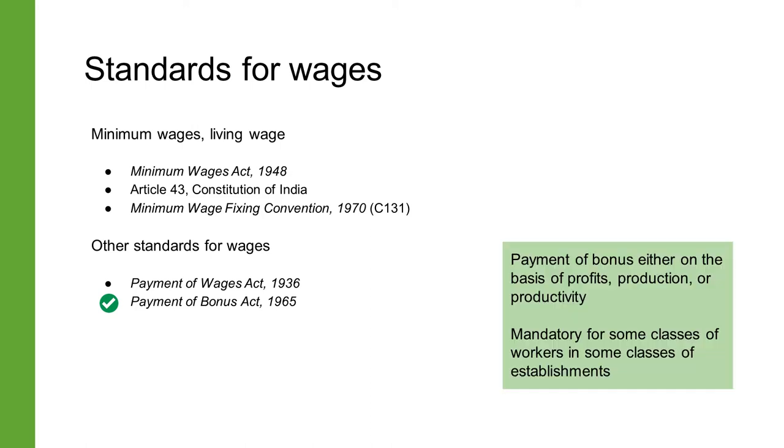The Payment of Wages Act of 1936 seeks to ensure that employers make timely payment of wages to employees and prevent some types of deductions from wages. The Payment of Bonus Act of 1965 provides for the payment of bonus — either on the basis of profits or on the basis of production or productivity — to some types of employees employed in some types of establishments. We learned previously that on average men are paid more than women, and this gap is higher in informal work.